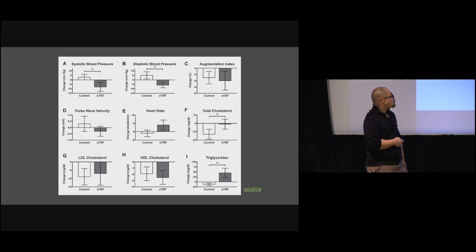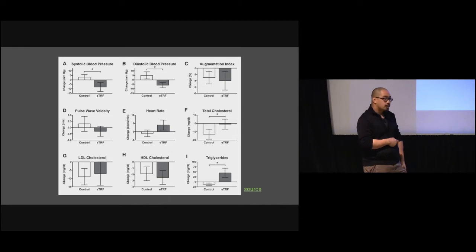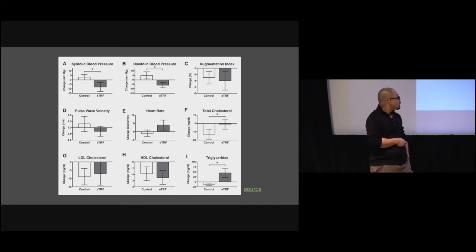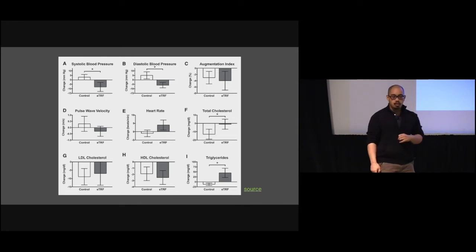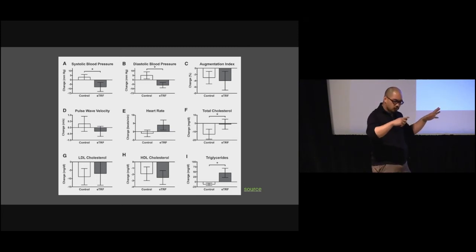Expect drops in blood pressure and diastolic blood pressure. Heart rate will go up a little bit — expect that. There will be changes in cholesterol and HDL. You're going to mobilize fat stores, which means your LDL may go up or down, but your triglycerides will typically go up in the initial phase and then down as you run out. It's probably not a good time to check lipids in the first six weeks. You will see some scary things — it's okay. They should normalize and the net effect should go down.